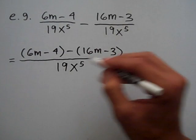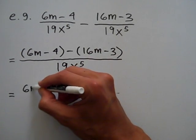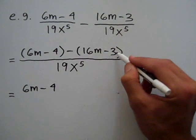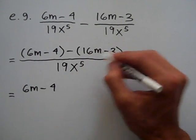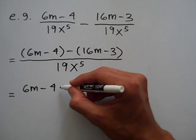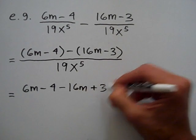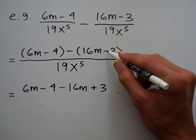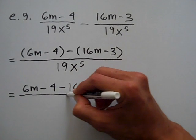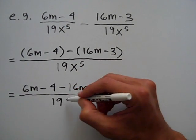When I remove the parentheses in the numerator, I'm going to have 6m minus 4. Be careful — since I'm subtracting this binomial, the sign of each term is going to change. So it's going to be minus 16m plus 3. This sign changed from minus 3 to plus 3. In the denominator I still have 19x to the 5th.